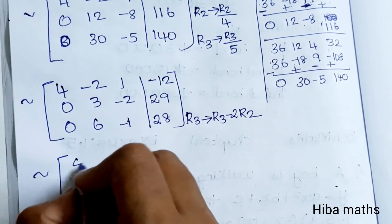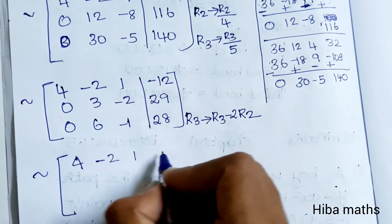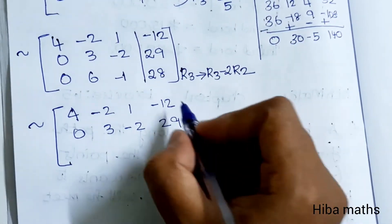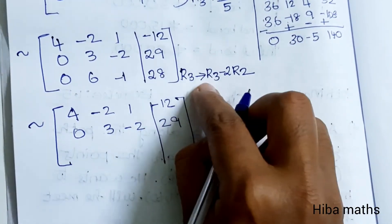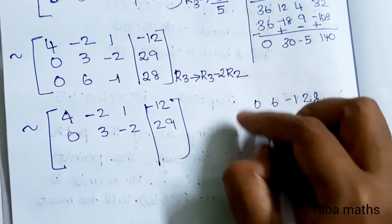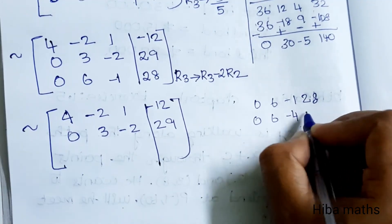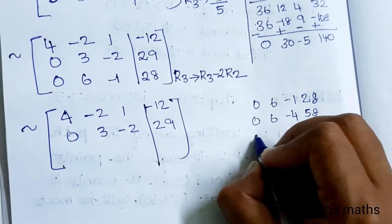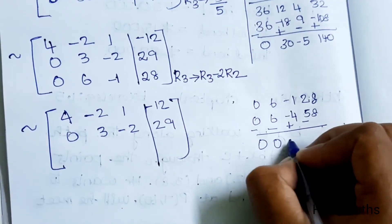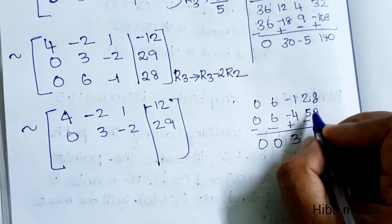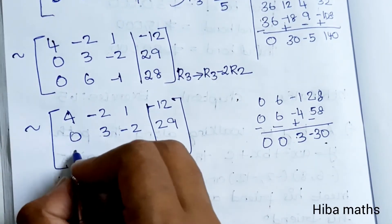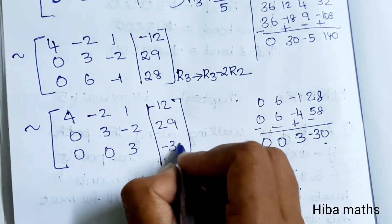R1 and R2 remain. R2: [0, 3, -2 | 29]. For R3, computing R3 - 2×R2: 2×R2 gives [0, 6, -4 | 58]. After subtraction R3 becomes [0, 0, 3 | -30]. So the final row gives 3c = -30.